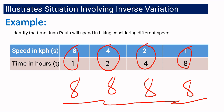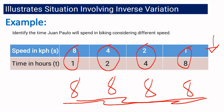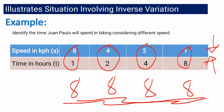Why? Because, number one, the product is constant. And number two, as the value of speed decreases, you will notice that the value of time increases.